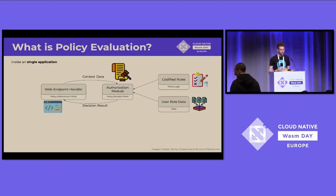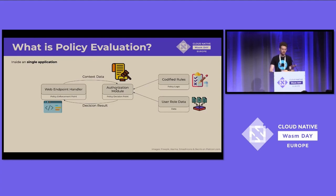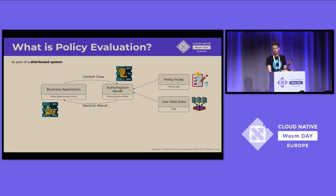Depending on what you're used to working with, this might look familiar. In a single application, we might have a web endpoint handler making a call to an authorization module in the same application, returning a result based on some codified rules and perhaps some extra user role data. We can do a similar thing in a distributed system where a business application makes a call to an authorization server — which may or may not be OPA — loaded with data and policy to help make that decision.